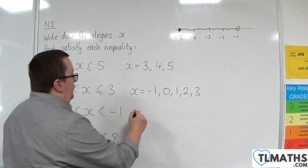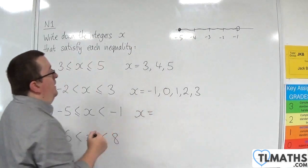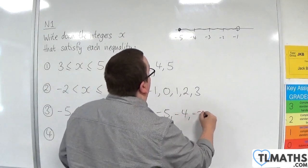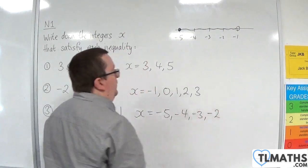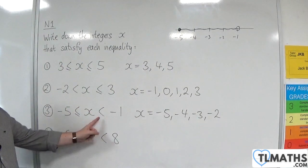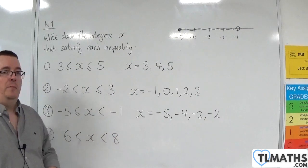So the x values that satisfy it are minus 5, minus 4, minus 3, and minus 2, but not minus 1. Because we're not including it, it has to be less than minus 1.